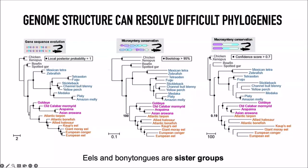That allowed us to pretty conclusively resolve the evolutionary history of these groups after the whole genome duplication. This was published in Science earlier this year — not because people care that much about fish phylogeny, but because these techniques using genome organization are novel and could be applied to other unresolved questions across the tree of life.